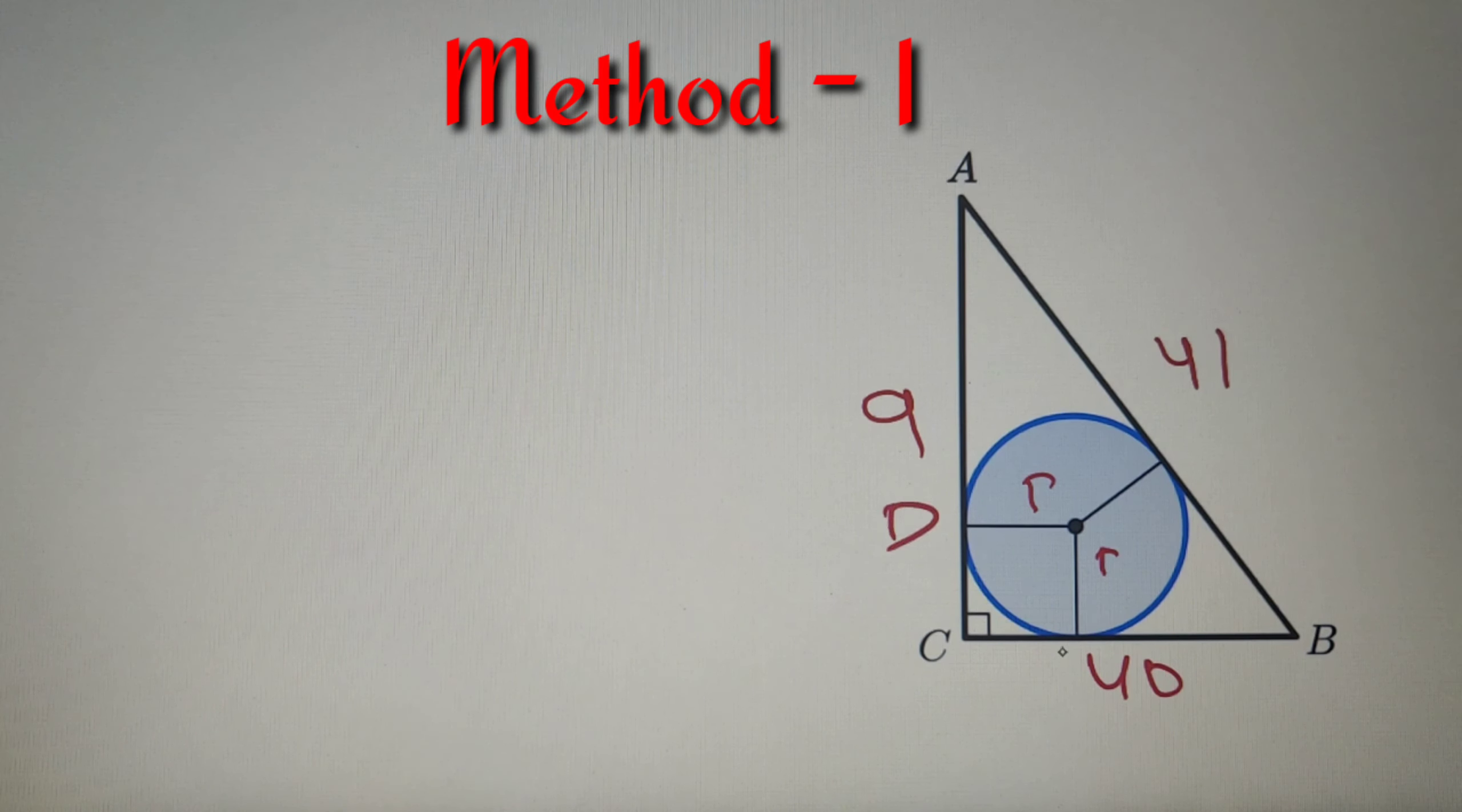So let's solve with our first approach. I can take these points as D, E, and F respectively. Now I can say that CD is equal to CE because tangents from the same point to the same circle. So if CD is equal to X, I can say that CE is also equal to X.